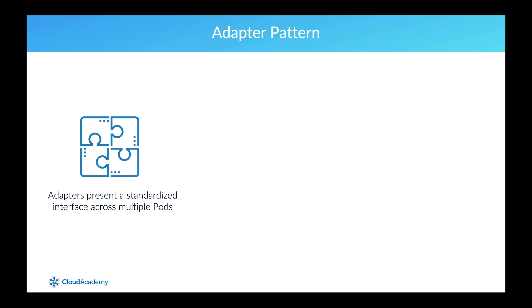Now let's consider our final pattern, the adapter pattern. The adapter pattern uses a container to present a standardized interface across multiple pods. For example, presenting an interface for accessing output in a standardized format for logs across several applications. The adapter pattern is the opposite of the ambassador pattern in that the ambassador presents a simplified view to the primary container, while the adapter pattern presents a simplified view of the application to the outside world.